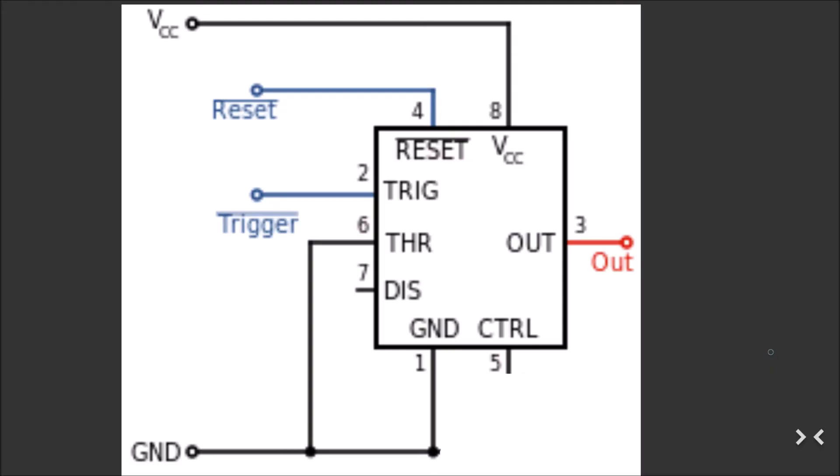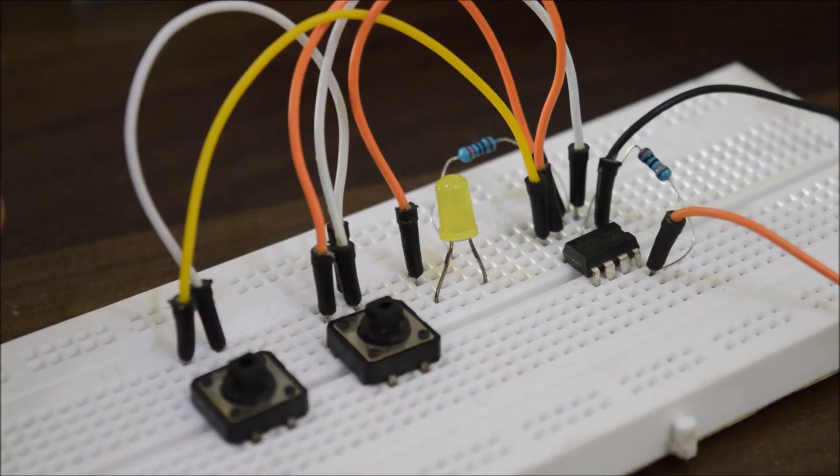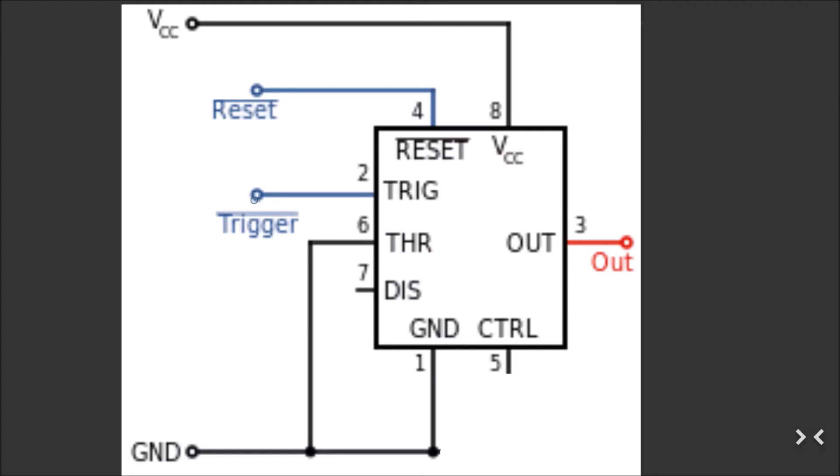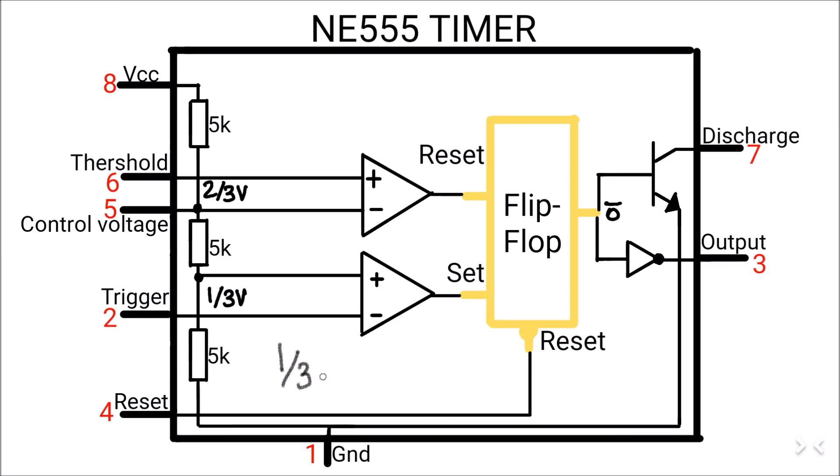Now, the second basic operation is known as bistable multivibrator. In this configuration, we utilize two push buttons, one to trigger the flip-flop and one to reset the flip-flop. This way, by applying ground potential to the pin number 2, the positive of the first comparator has higher voltage than the negative one, so it activates the flip-flop and turns the output of the IC.